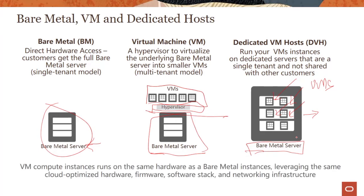The VM compute instances and dedicated VM host scenarios run on the same hardware as a bare metal instance. The commonality is the bare metal machine — it leverages the same cloud-optimized hardware, firmware, software, networking, etc. This was a departure from many cloud vendors, as we call it gen one versus gen two, where we designed this infrastructure starting with bare metal, and then everything was built as a first class citizen on top of it.